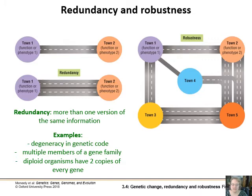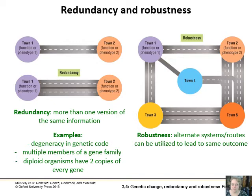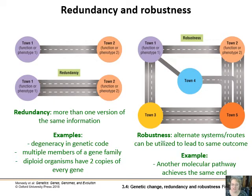Robustness is an even stronger pattern than redundancy, where you have multiple routes to the same place. From town one to town five, there are multiple pathways — through town three, town two, or a deviation through town four. You have alternate systems and routes that lead to the same outcome. You see this quite a lot in biology, where another pathway or method achieves the same goal — multiple enzymes that can fill a function.